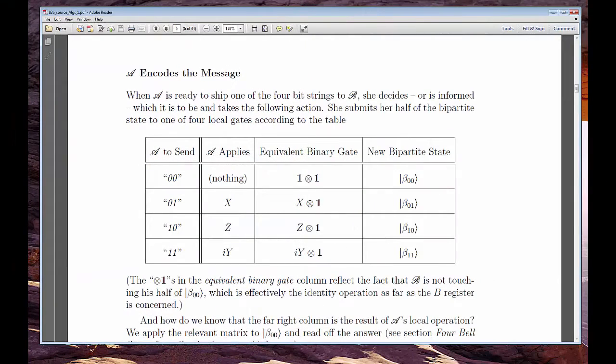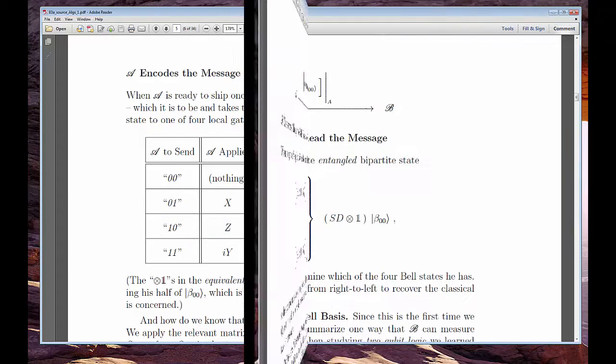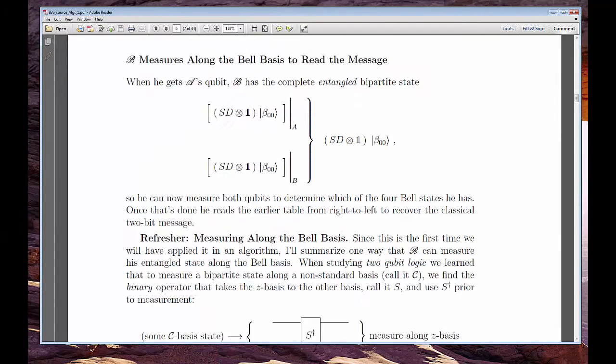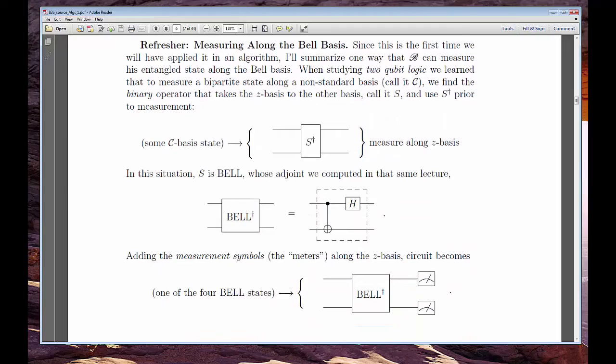When Alice is ready, she authors one of the four two-bit messages. She then runs her entangled qubit, which is her half of the Bell state, through a unary logic gate, the choice of which is determined by the message she wants to send. Next, Alice ships her qubit off to Bob, who will then have the full, still-entangled pair.